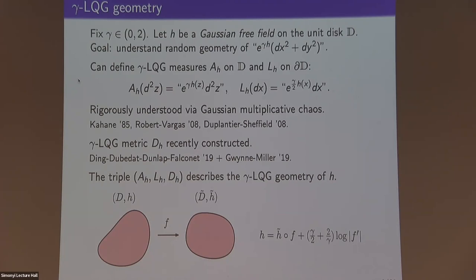More recently, the LQG metric D_H was also constructed — a much more challenging undertaking because it is a very nonlocal function of the Gaussian free field. Given a Gaussian free field H, you can understand the LQG geometry as the metric measure space (A_H, L_H, D_H) equipped with a conformal structure as well.